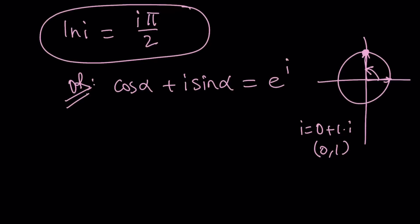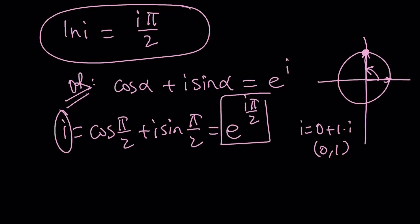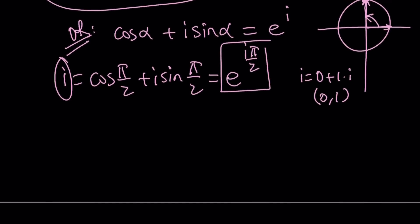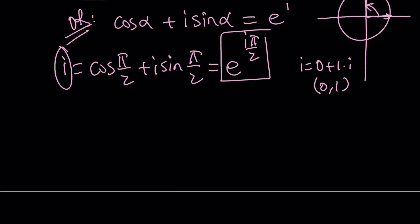So, this means i can be written as cosine pi over 2 plus i sine pi over 2. But that can also be written as e to the power i pi over 2. This is the most beautiful part, because now we can write i as e to the power i something, with a real base. Now, we can just go ahead and use this.